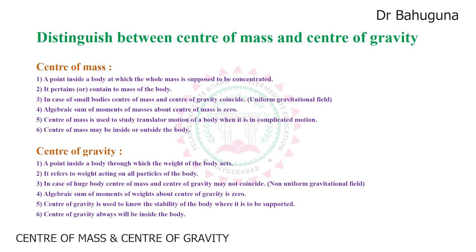Fifth point, in center of mass: the center of mass is used to study the translatory motion of a body when it is in complicated motion. For example, when a body is projected and in its path it explodes, the center of mass of the system lies in the same parabolic path expected. Whether the particles are together or exploded going in different places, the center of mass of the total system will remain traveling the parabolic path only.